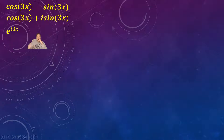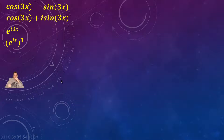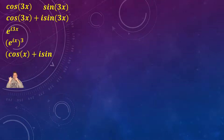Then we're going to apply a basic rule of exponents. That means I can write this as e to the ix and then the whole thing raised to the third. Now e to the ix is perhaps the basic complex number, but we can rewrite it simply as cosine of x plus i sine of x, the whole thing raised to the third.